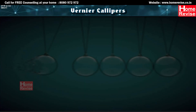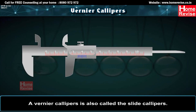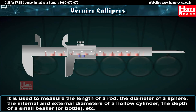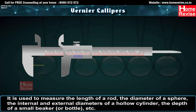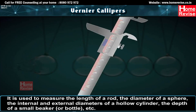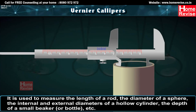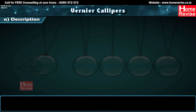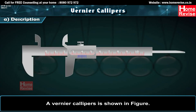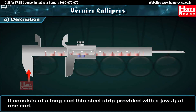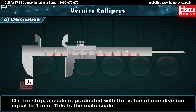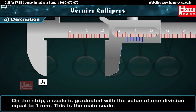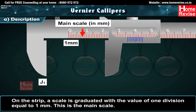Vernier Calipers, also called slide calipers, is used to measure the length of a rod, diameter of a sphere, internal and external diameters of a hollow cylinder, and the depth of a small beaker or bottle. It consists of a long thin steel strip with jaw J1 at one end, bearing a main scale graduated with 1 division equal to 1 mm.